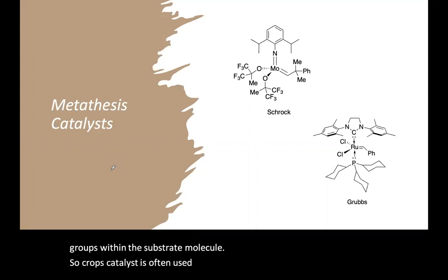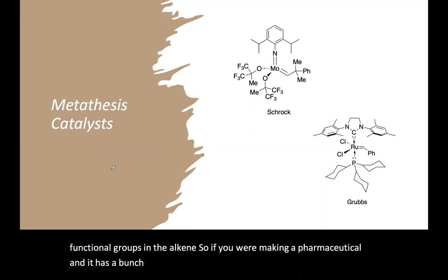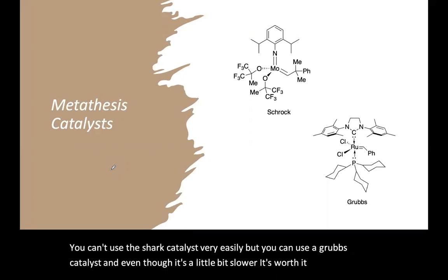So Grubbs catalyst is often used for reactions in which there are other functional groups in the alkene. So if you were making a pharmaceutical and it has a bunch of esters and amides and so on, you can't use the Schrock catalyst very easily, but you can use a Grubbs catalyst. And even though it's a little bit slower, it's worth it for the relatively expensive products that you're making.